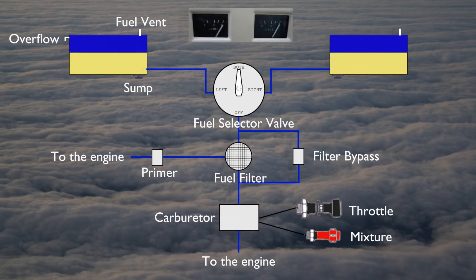Fuel gauges allow the pilot to verify the fuel on board. Airplane fuel gauges are often not very accurate and are just there to give you a rough idea of fuel on board.